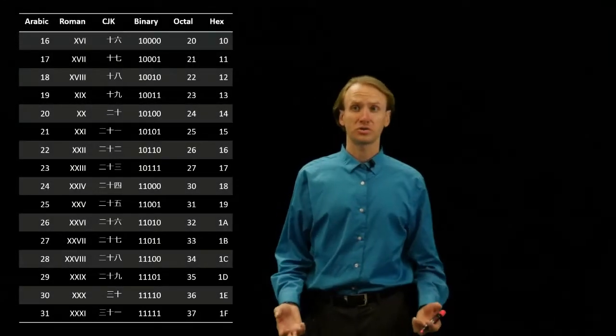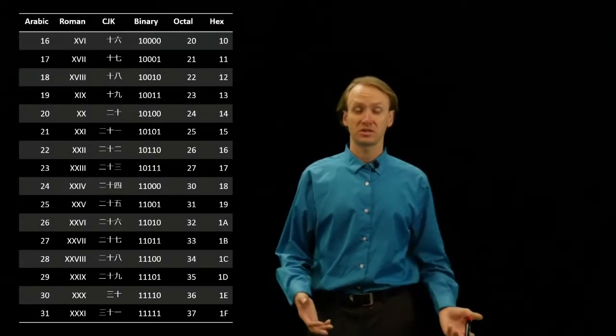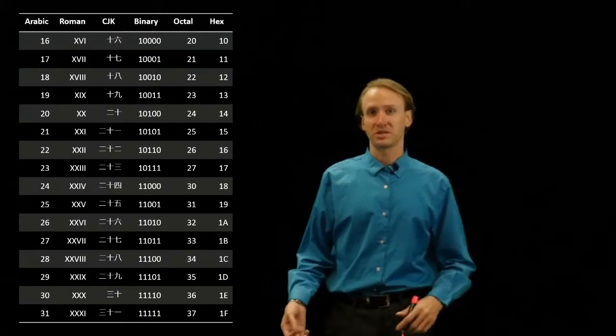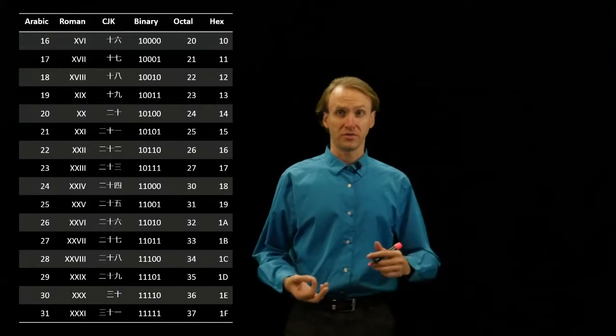If we pick a couple of larger numbers, like say 23 plus 27, we know we should get 50 out. If we do the arithmetic in binary, it will look a little different.